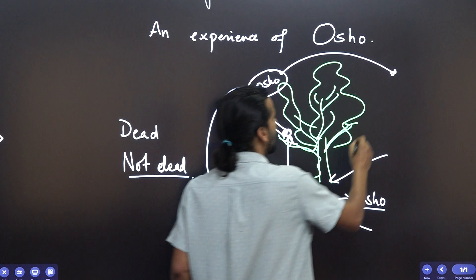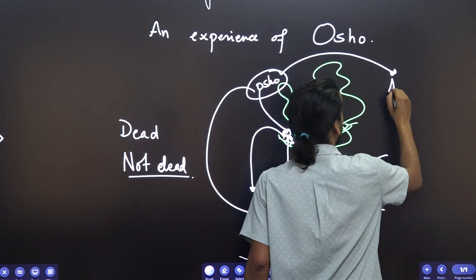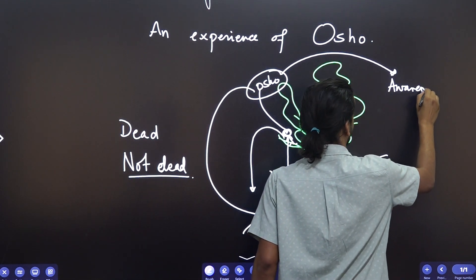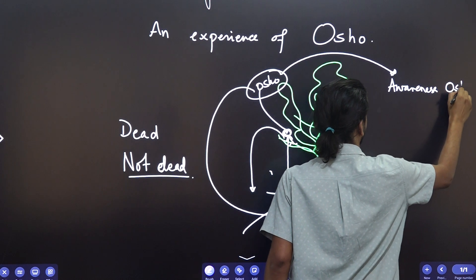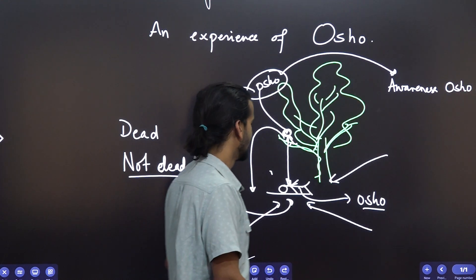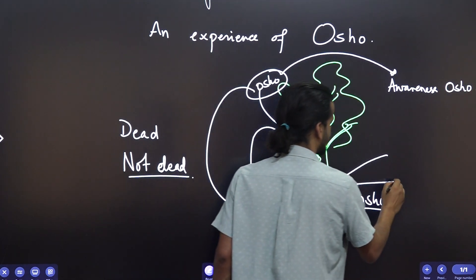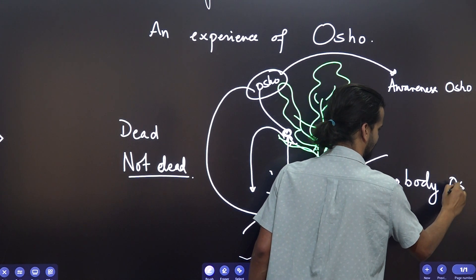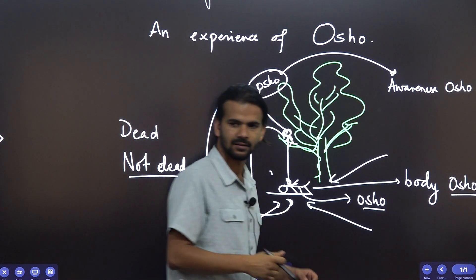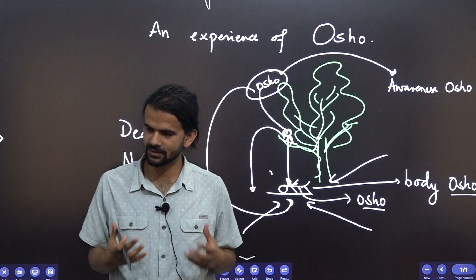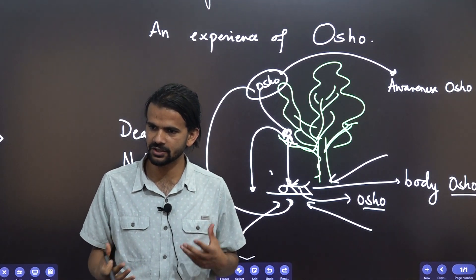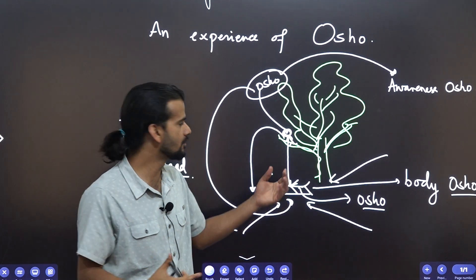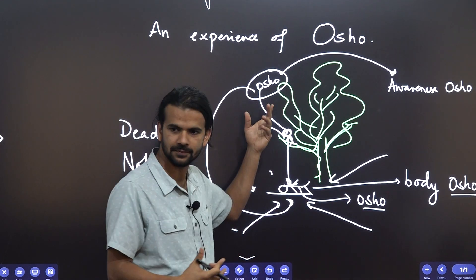We call him Awareness Osho. And we call this Body Osho. Does that justify the names? This is the Body of Osho. This is the Awareness of Osho.